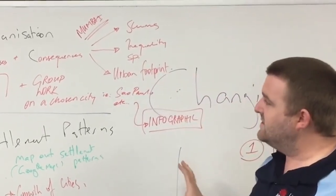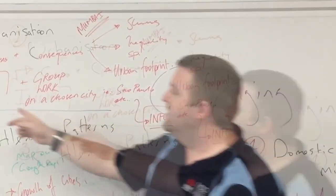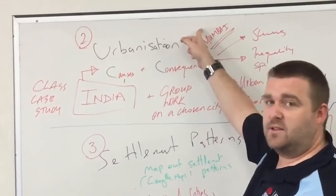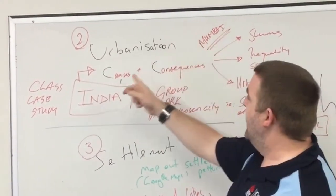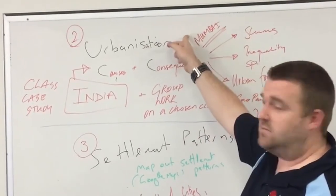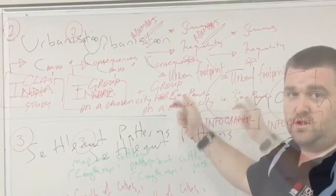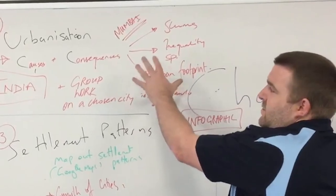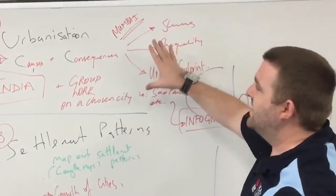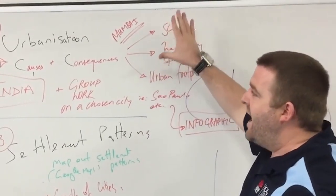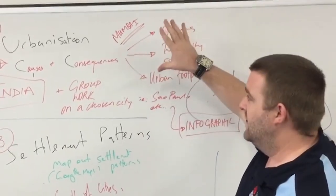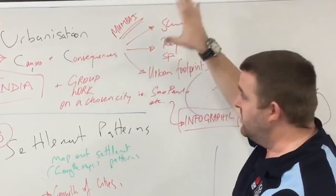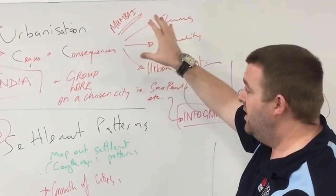Once they've created their infographics as a class, we'll do a quick case study of India with Mumbai being the chosen city and look at the causes of urbanisation to Mumbai and the consequences — the huge slums there. That will lead us to looking at questions of how do we deal with it, how do we make sure that the worst excesses, the worst consequences of urbanisation don't occur.